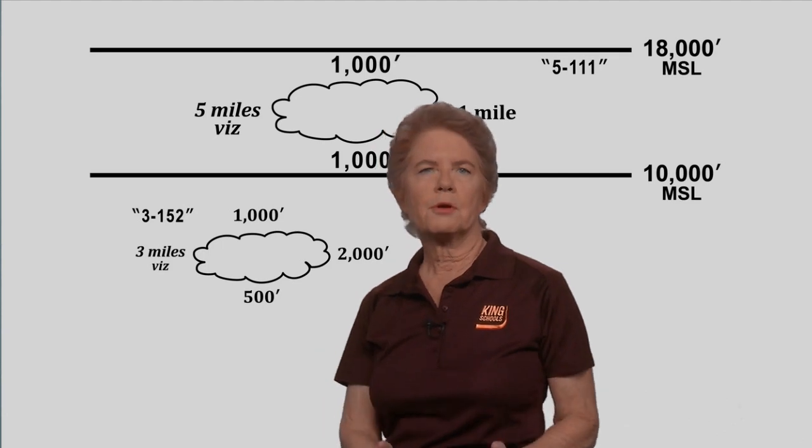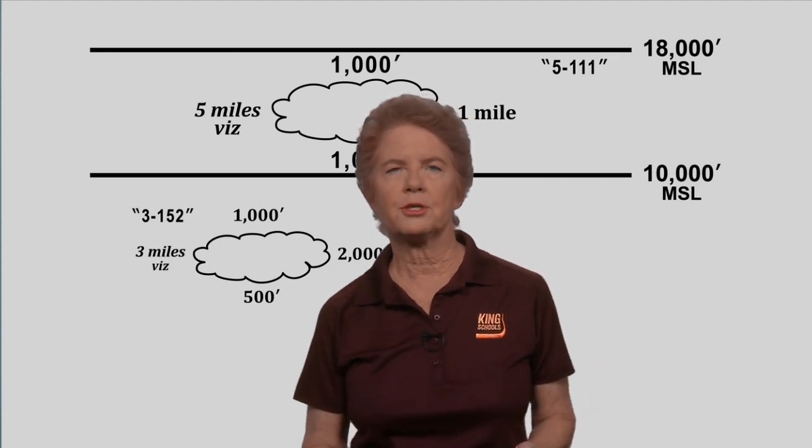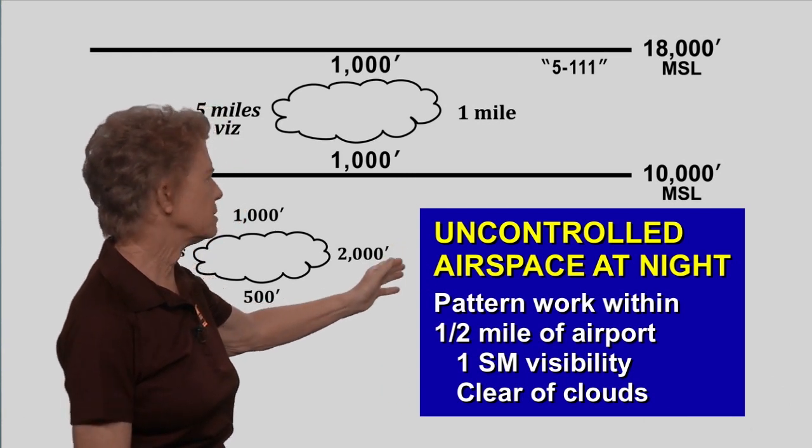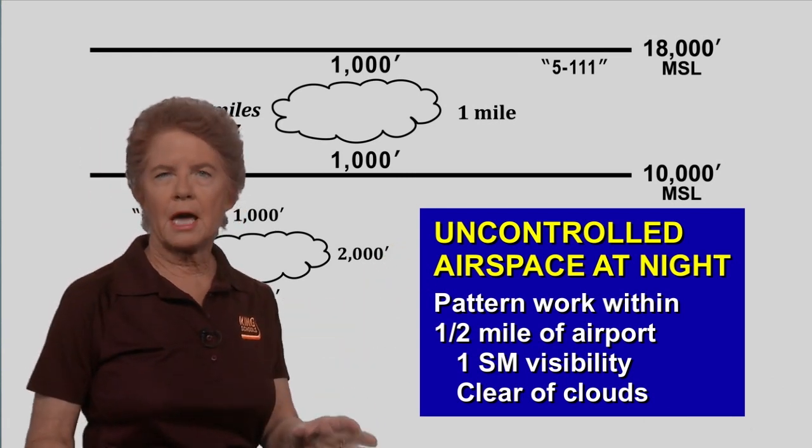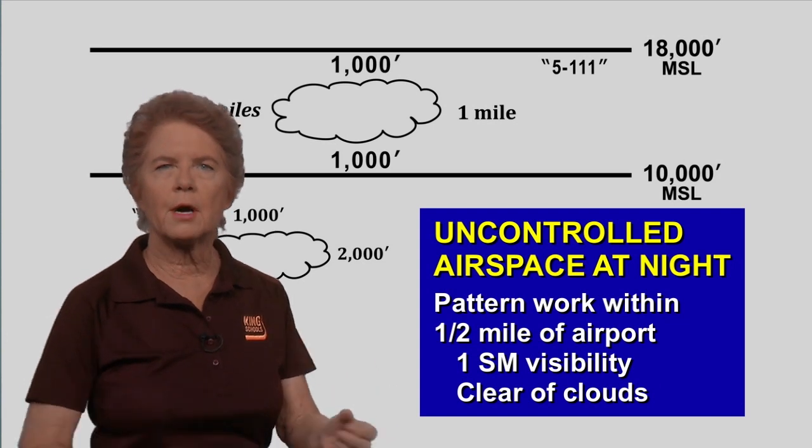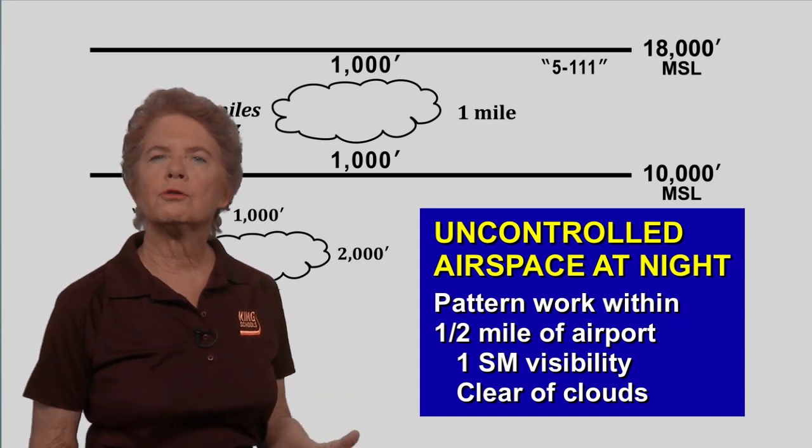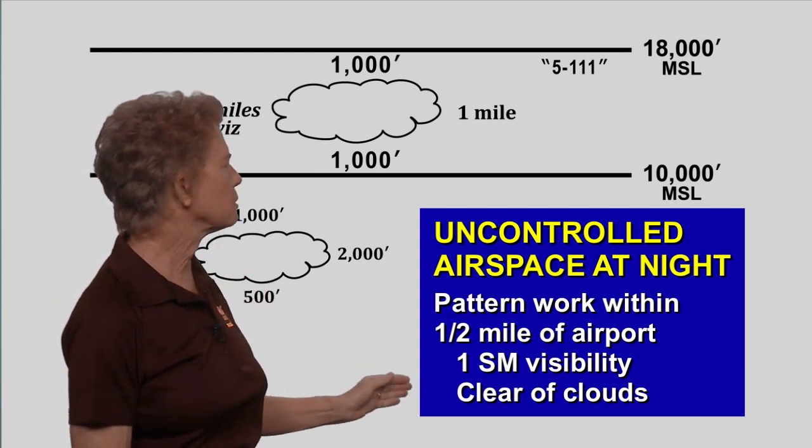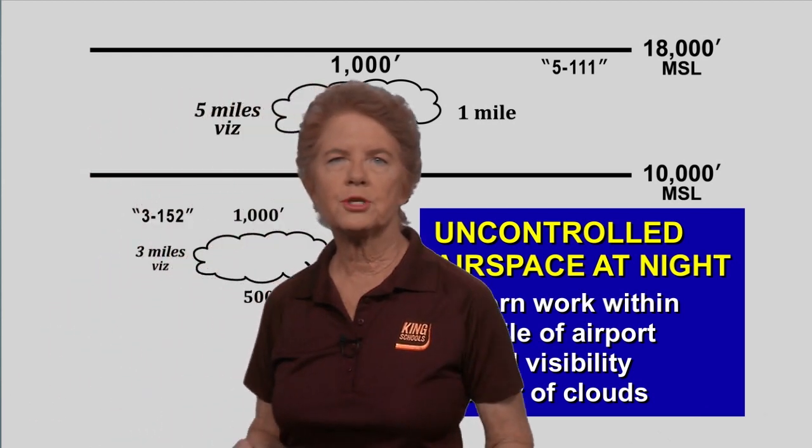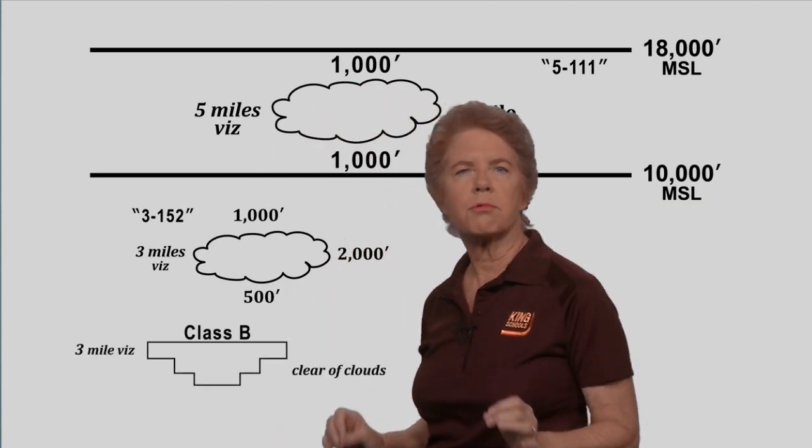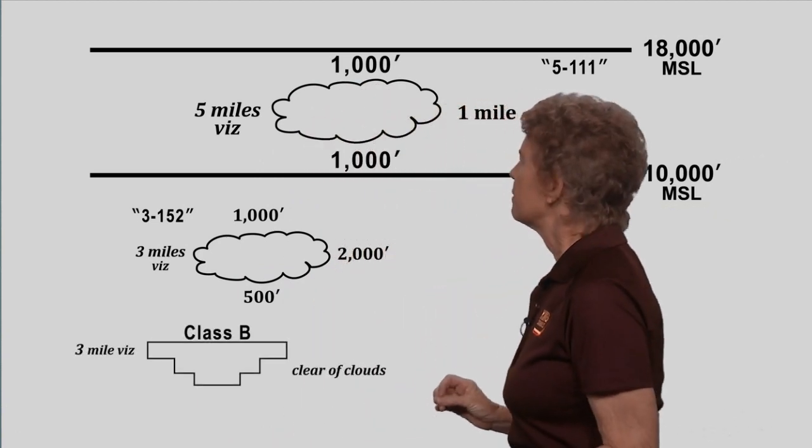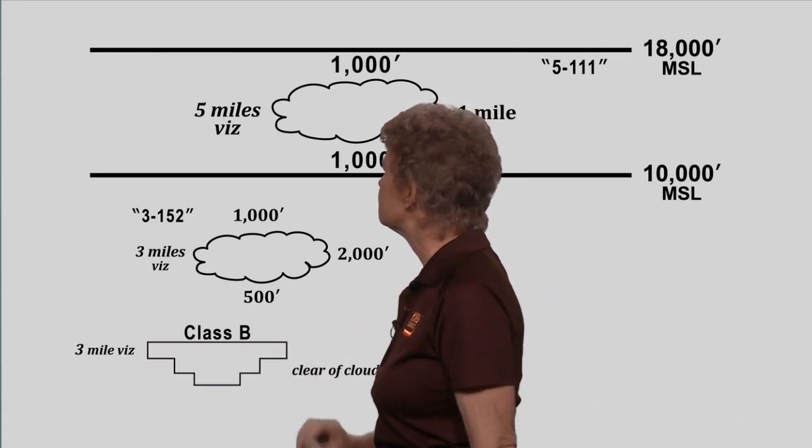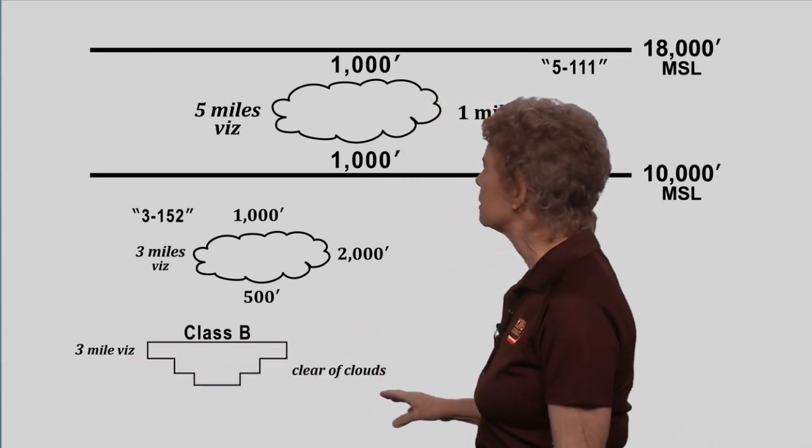Now remember, there are two exceptions. The first is that in uncontrolled airspace at night, if you're doing pattern work within a half mile of an airport, all you need is one statute mile visibility and clear of clouds. The second exception is that in Class Bravo airspace, the requirement is three miles visibility, three statute miles, and clear of clouds.